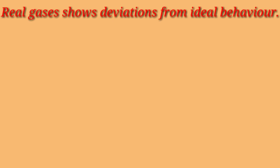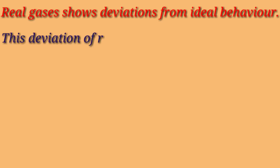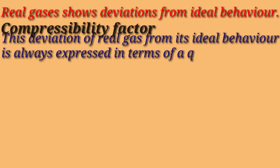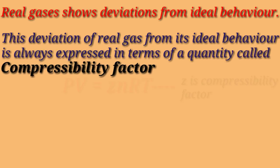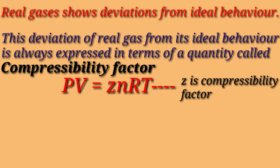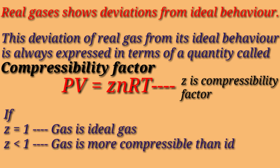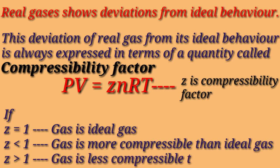The deviation of real gas from ideal behavior is expressed in terms of a quantity called the compressibility factor Z, given by the equation PV = ZnRT. If Z equals 1, the gas is ideal. If Z is less than 1, the gas is more compressible than an ideal gas. If Z is greater than 1, the gas is less compressible than an ideal gas.